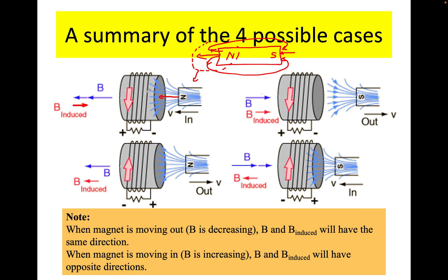If I point my thumb to the right — in the direction of the induced field — my fingers curl down around the coil, meaning the current is coming down. You can call this clockwise. If the north pole is leaving, the field is pointing to the left but getting weaker, so the induced field will be in the same direction. Looking at the south pole: the field line goes to the right, and if the south is leaving, it's getting weaker, so the induced field will be in the same direction. Using the right-hand rule, the current will be coming down as well, with my thumb pointing to the right.